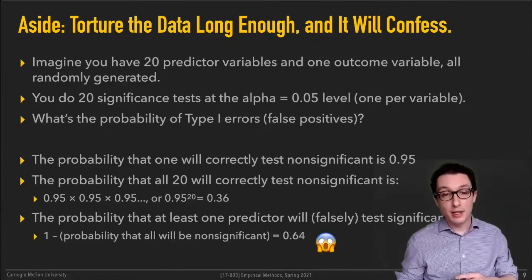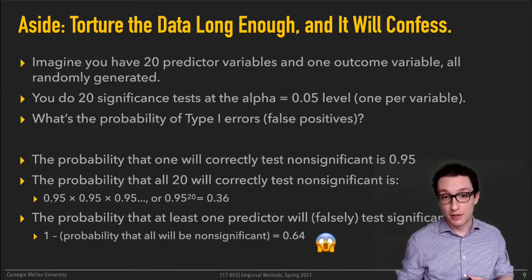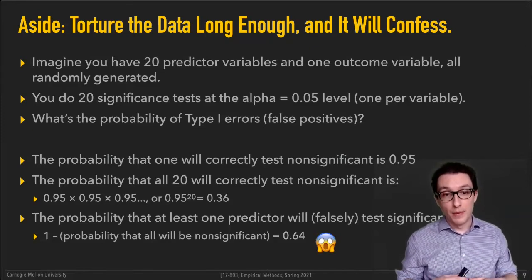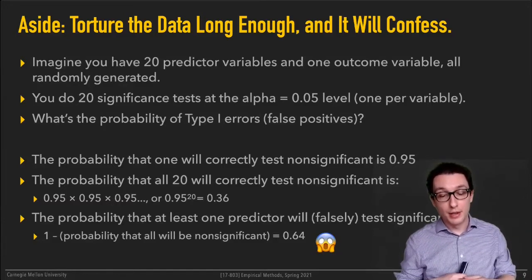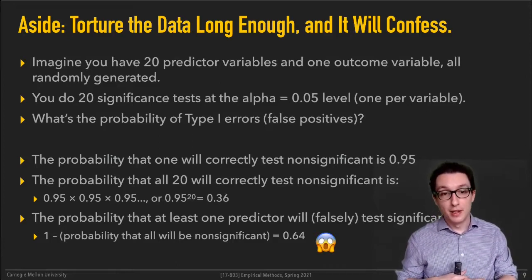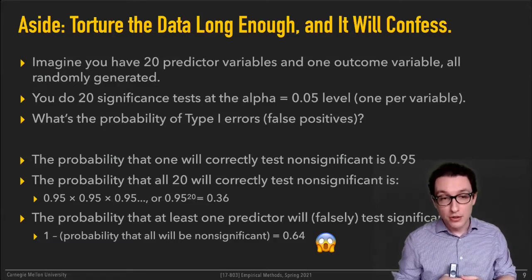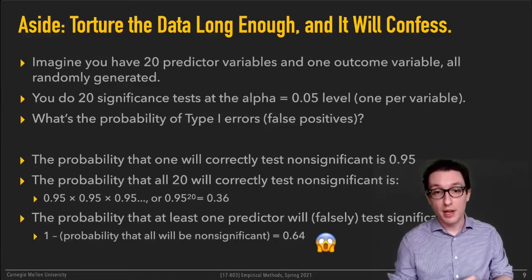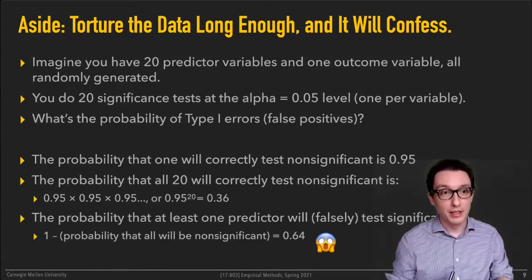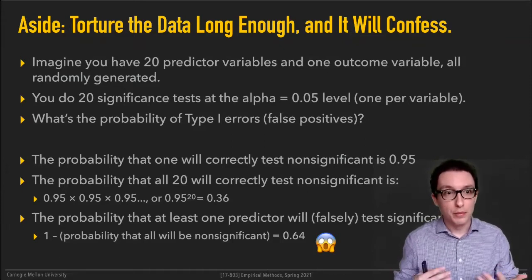What you should be doing instead is to always compute, in addition to the statistical significance — which obviously you want to include as well — some measure of effect size, some practical relevance and practical significance. In addition to taking all these precautions for statistical significance, you want to accompany these conclusions by evidence of some non-negligible effect size as well. When you have lots of data and lots of comparisons, chances are you'll just stumble across something.